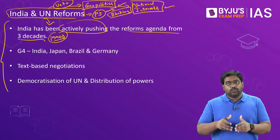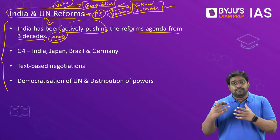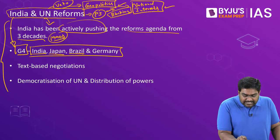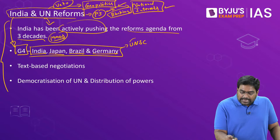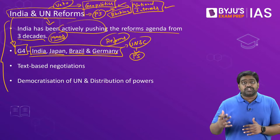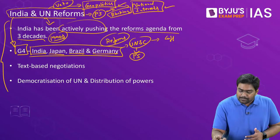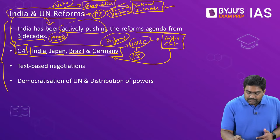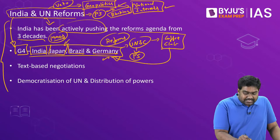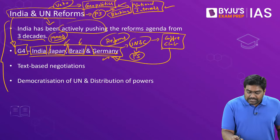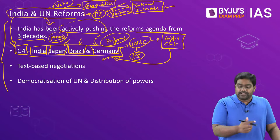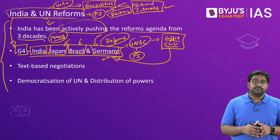India has even formed an informal grouping called the G4 at the UN that includes like-minded countries. India has aligned with Japan, Brazil, and Germany — all contenders for a permanent seat at the UNSC — and they are jointly pushing for UN reforms and putting pressure on the P5 countries. But they are also facing pressure from other countries which have formed a counter group called the coffee club. Pakistan is a regional rival of India, South Korea is a regional rival of Japan, Argentina and other South American countries are regional rivals of Brazil, and European countries like Italy and Spain are regional rivals of Germany. Even they don't want to concede powers to just a few countries, so they counter G4 initiatives by forming the coffee club.